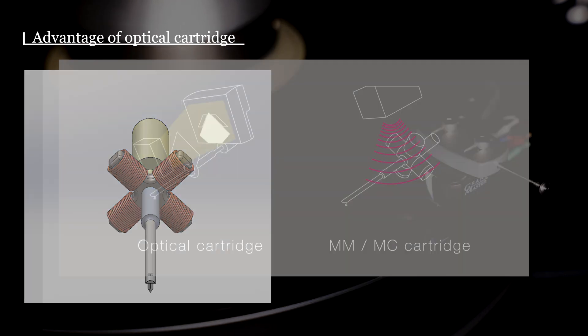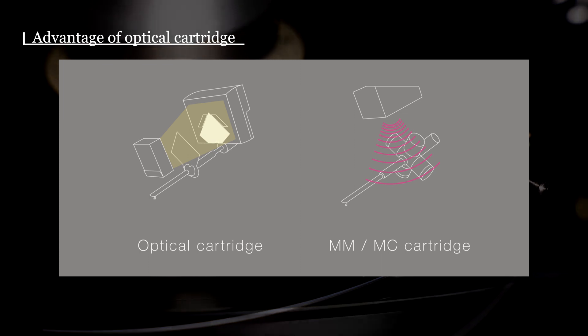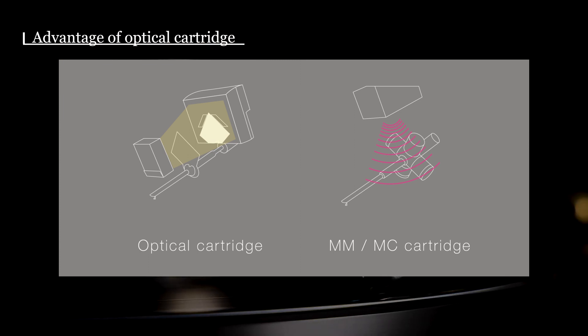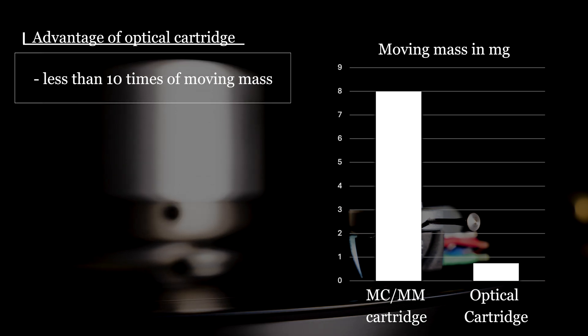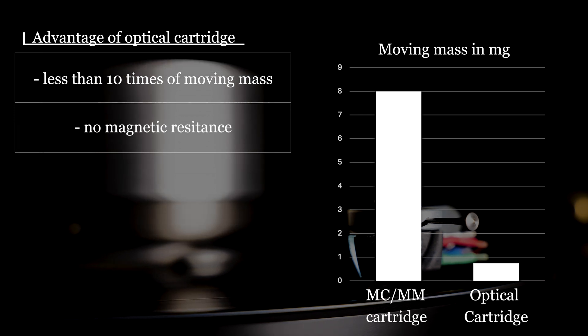Optical cartridges use light instead of magnets or coils for detection, so they are free from such problems. Without any magnets or coils, the moving mass is 10 times less than an average MC or MM cantilever, and it also has no magnetic resistance.